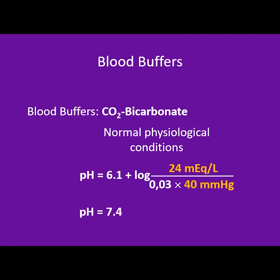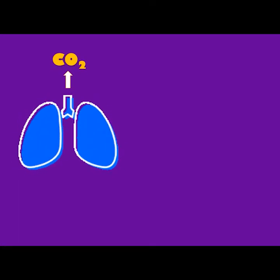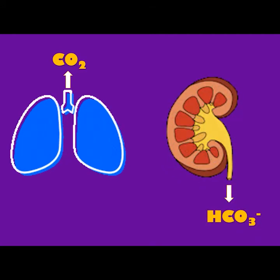In normal physiological conditions, the concentration of bicarbonate is 24 milliequivalents per liter and the pressure of carbon dioxide is 40 mmHg. Replacing these values in the equation gives us 7.4, which is the normal pH for the body. The carbon dioxide-bicarbonate buffer is crucial because we can regulate it in two ways: carbon dioxide pressure is regulated in the lungs, and bicarbonate concentration is regulated in the kidneys.